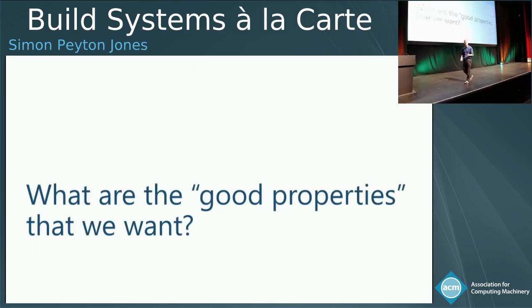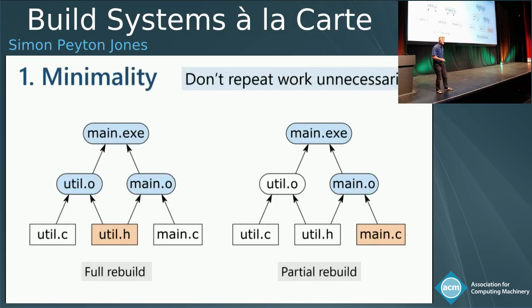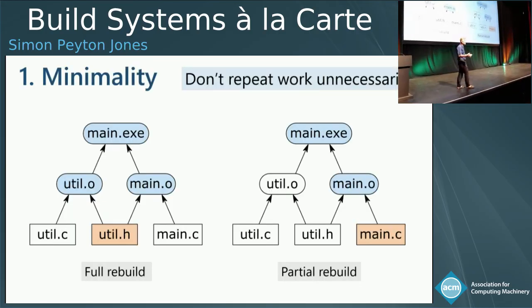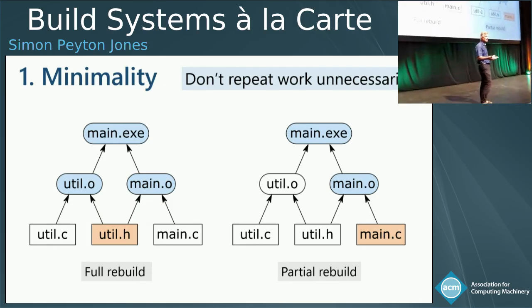Before I can tell you about that, I have to tell you about what the good properties of a build system might be. Here are four. One: minimality. Minimality is fundamentally what we want build systems to do — rebuild as little as possible.